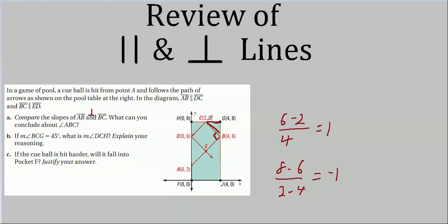If angle BCG is 45 degrees, what is angle DCH? We're told AB is parallel to DC. A line perpendicular to one line is perpendicular to any line parallel to it, so BC is also perpendicular to DC, making angle BCD = 90°. Since BCG = 45° and the whole angle BCD = 90°, we need angle DCH = 45° to complete the 180° straight angle.